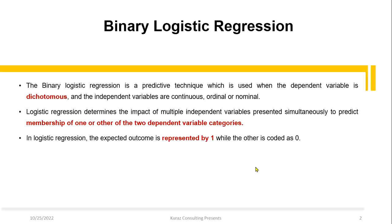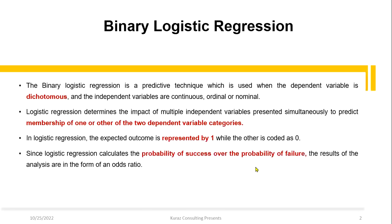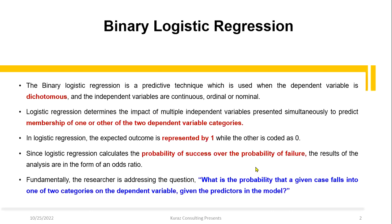In logistic regression, the expected outcome is represented by one while the other is coded as zero. Since logistic regression calculates the probability of success over the probability of failure, the results of the analysis are in the form of an odds ratio. Fundamentally, the researcher is addressing the question: what is the probability that a given case falls into one of the two categories on the dependent variable given the predictors in the model?